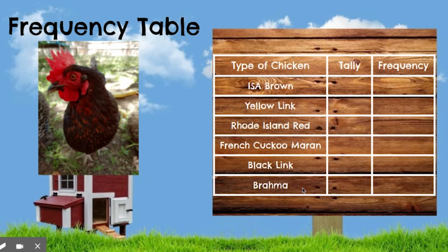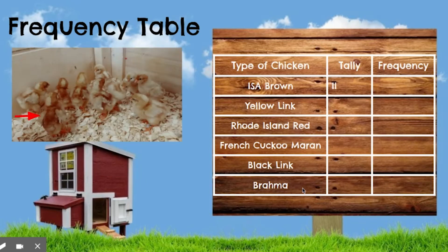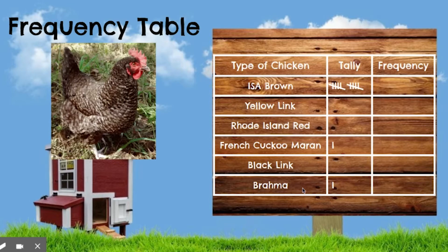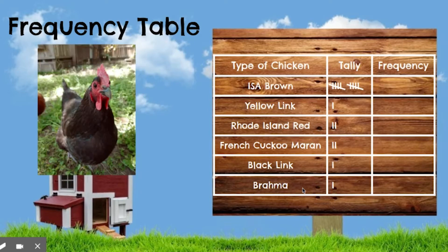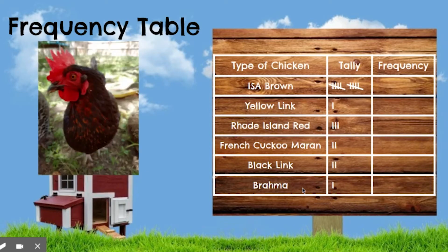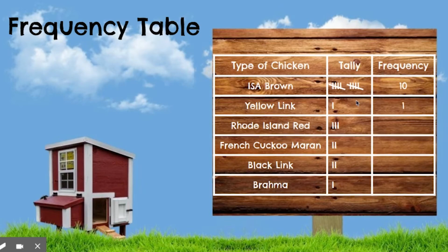Hopefully you have all of the tallies. Going through the tallies: the ISA browns had 10. Then we had one Brahma, two French cuckoo marins, one yellow link, three Rhode Island reds, and two black links. So the frequency counts are: ISA browns — 10, yellow links — 1, Rhode Island reds — 3, French cuckoo marins — 2, black links — 2, and one Brahma. Those are the chickens that we have.